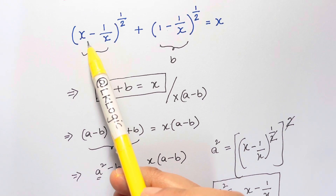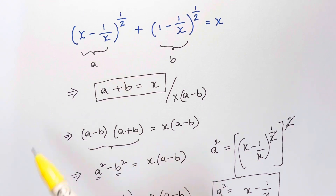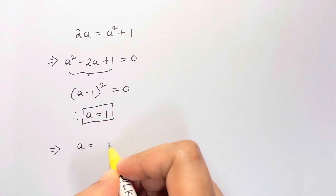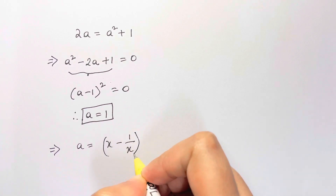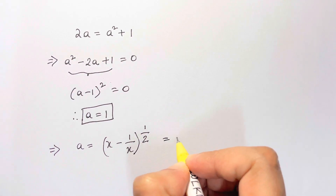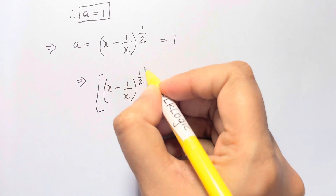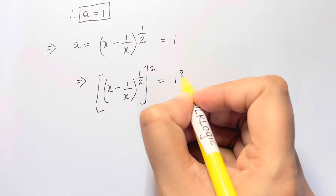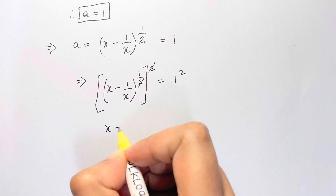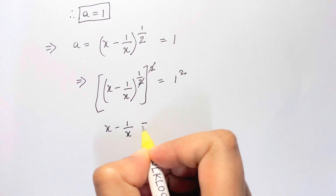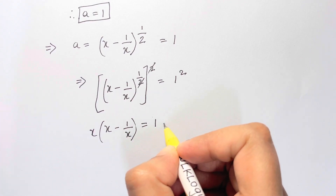Now we already know that a equals (x minus 1 over x) to the power of half, which equals 1. Squaring both sides, the exponents cancel, giving us x minus 1 over x equals 1.